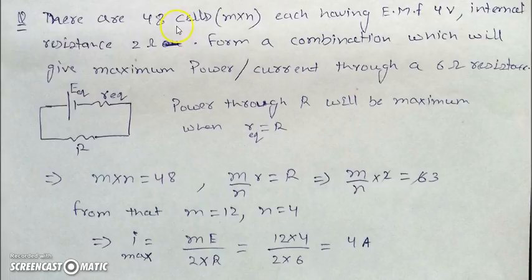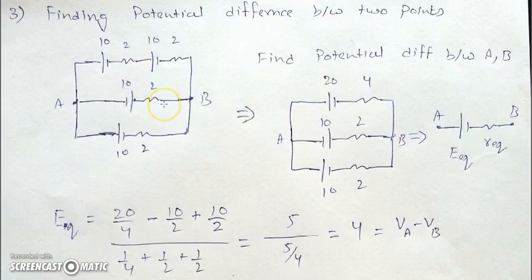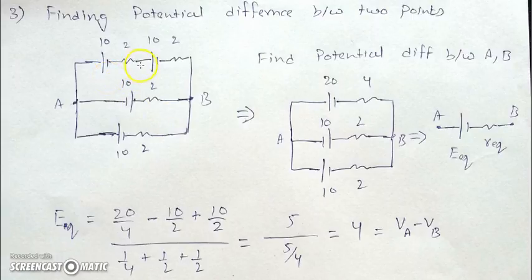So 4 amperes is the maximum current we can produce with these 48 cells through a 6 ohm resistance. The third application of cell combinations is finding the potential difference between two points. These questions can be solved by KVL, KCL, nodal, superposition, or other methods — you must judge which is simpler.